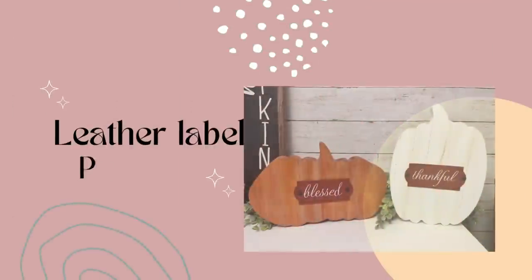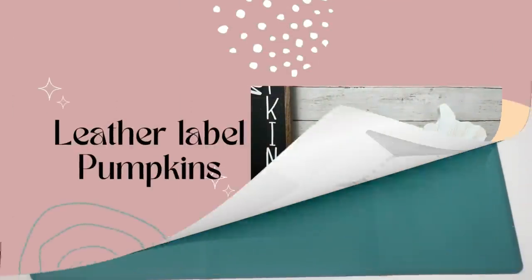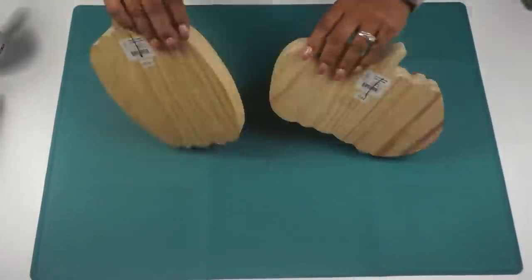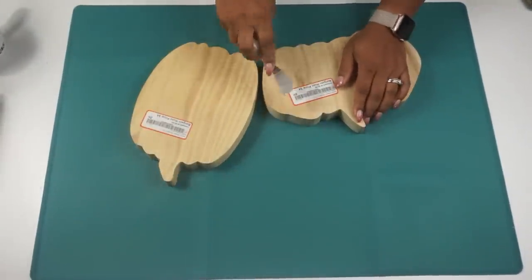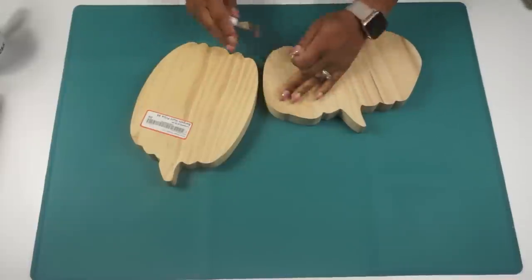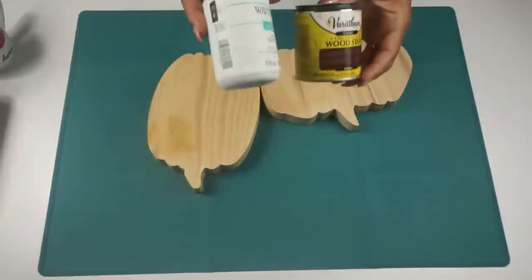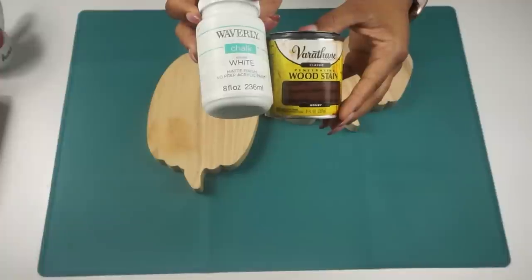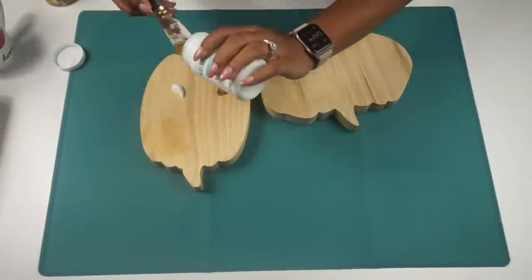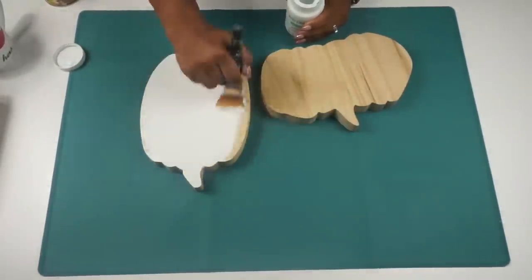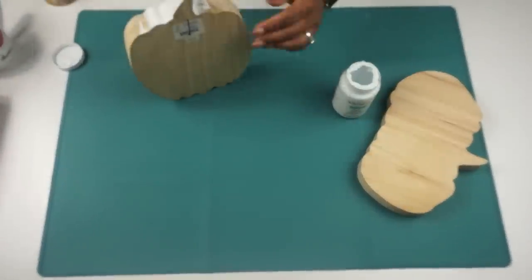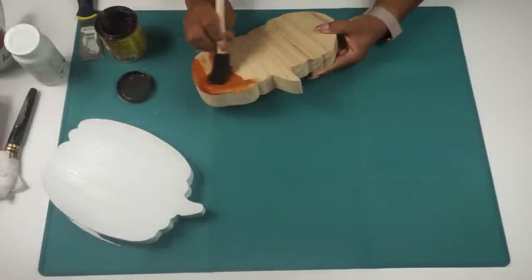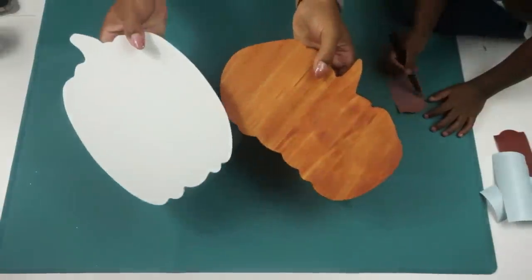Alright so starting off we're going to create these leather label pumpkins and I really love how these turned out. I actually picked these up at a store called Bargain Hunt near me. These were only four dollars each and I got them after fall last season. So what I'm going to do is remove the labels and then I'm going to use my Waverly chalk paint in white to paint one of them and then the other one I'm going to use some honey stain wood stain from Varathane. I did just one coat of the stain and two coats of that white paint and I also did the sides of each of those pumpkins.